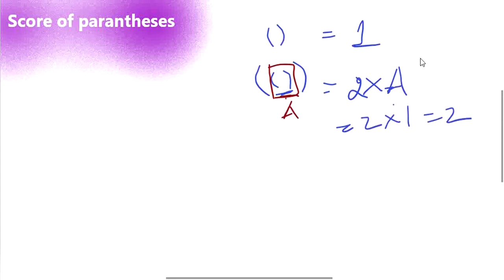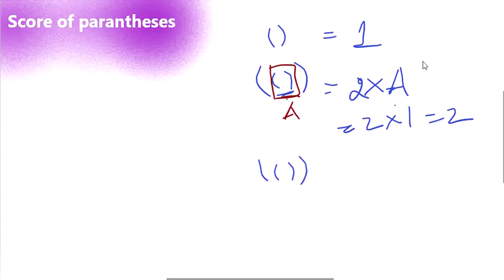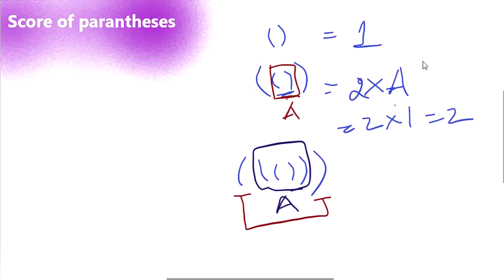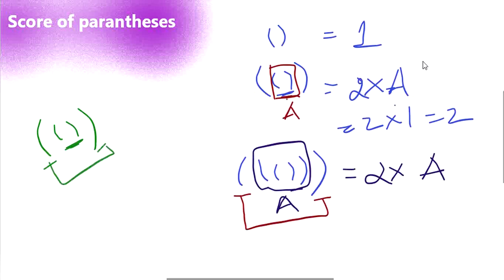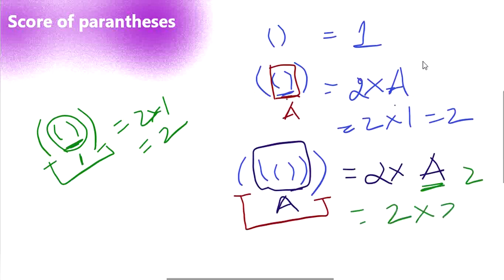Let's expand it one more level. Consider the outermost open and closed parenthesis as one set, and whatever is in between is our A — so it is going to be 2 into A. Expanding A separately: it is one open-closed parenthesis with one more level outside, so its score is 2 into 1 which is 2. So the overall score of A is 2, and 2 into 2 gives us 4.